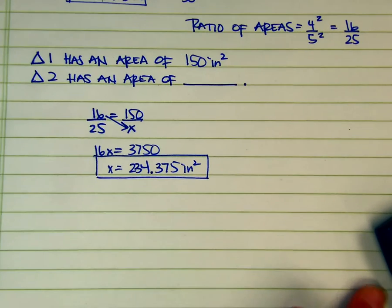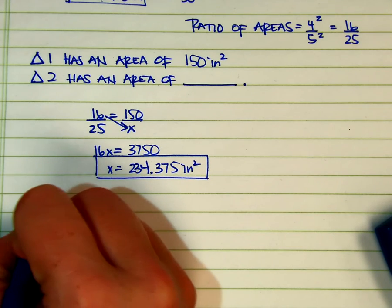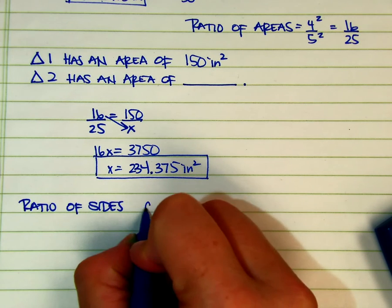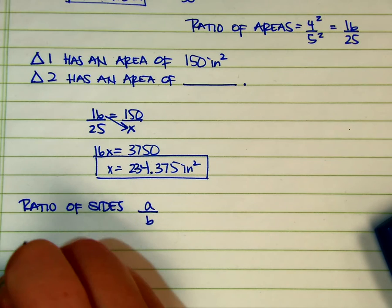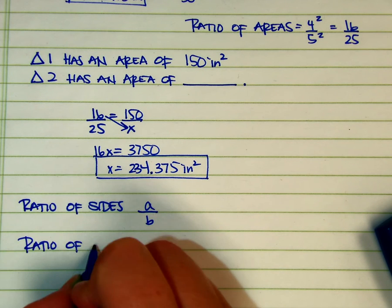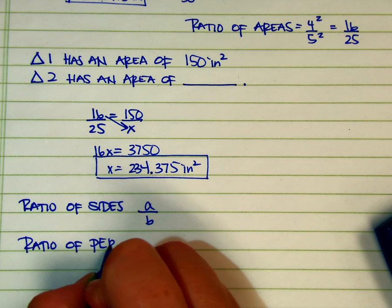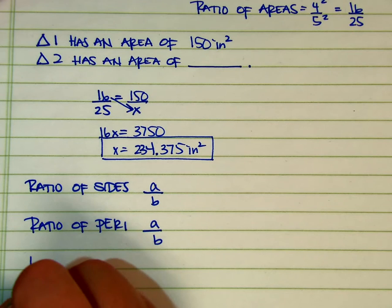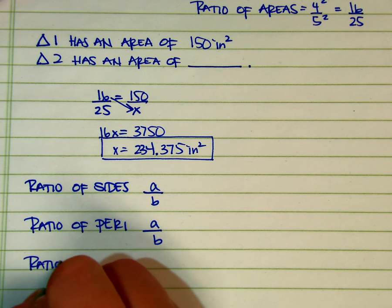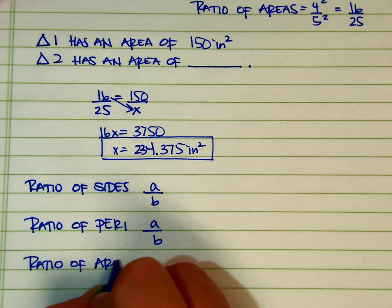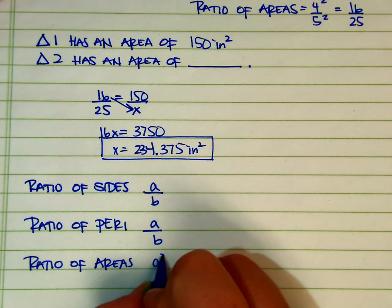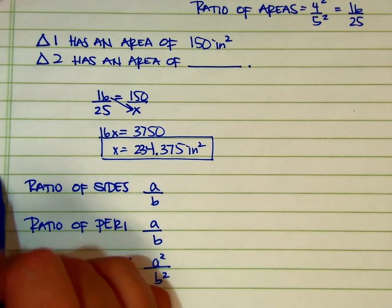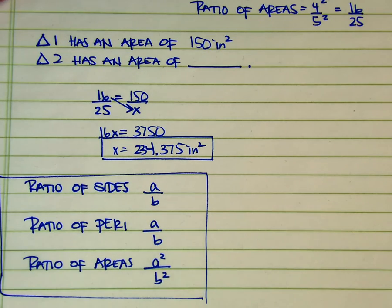So in summary, the ratio of sides, let's say we'll put it as A over B. The ratio of perimeters is the same, which is A over B. And the ratio of areas is A squared over B squared. Okay, so that is the relationship of similar figures.